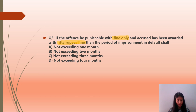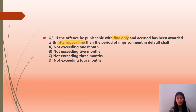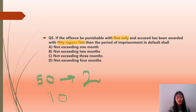Section 67 says that in default of payment of fine, imprisonment shall not exceed the following scale: for any term not exceeding 2 months when the amount of fine shall not exceed 50 rupees. So if the fine is 50 rupees, then the imprisonment in default is 2 months. And if the fine is 100 rupees, the imprisonment is 4 months, as per Section 67 of IPC.